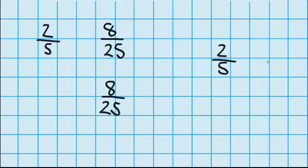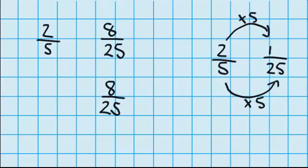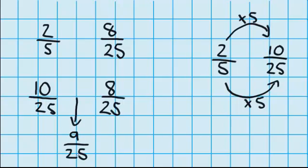I'm going to leave 8 25ths as it is, and I'm going to change 2 fifths so that it is also in 25ths. So I need to change my denominator so it's not in 5ths, it's up in 25ths. Well to do that I have made my denominator 5 times bigger, so I'll have to make my numerator 5 times bigger as well. 2 times 5 is 10. So I know 10 25ths is the same as 2 fifths. So I can choose any fraction between these two amounts, and an obvious choice is going to be 9 25ths.